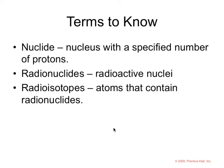A nuclide is the nucleus of an element or an atom with a specified number of protons. Radionuclide means radioactive nuclei, and a radioisotope is atoms that contain radionuclides. So when we're talking about nuclear reactions, nuclear chemistry, we talk about different isotopes. It's not just an element, it's actually an isotope of an element.